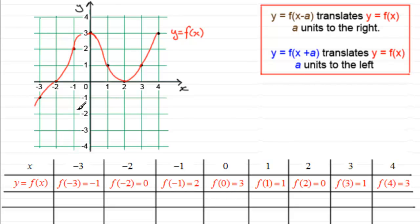Now what happens if we try out something like this? Let's say we try out y equals f of x minus 1. What happens if we take the point where x is 4? If x was 4, we've got y equals f of 4 minus 1, in other words f of 3. But what is f of 3? We can see that f of 3 was 1, or we could look straight away from the graph here. Either way, when x is 4, f of 3 equals 1.